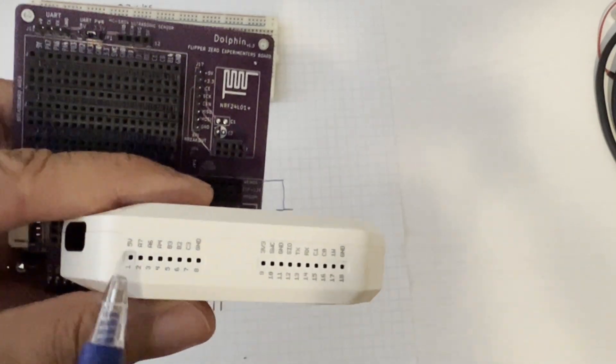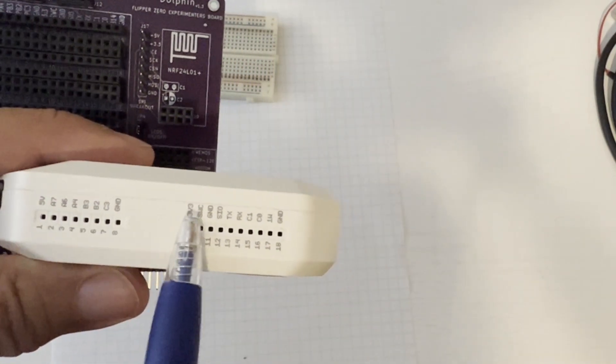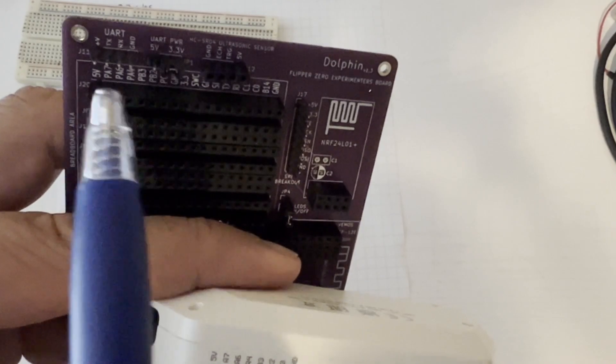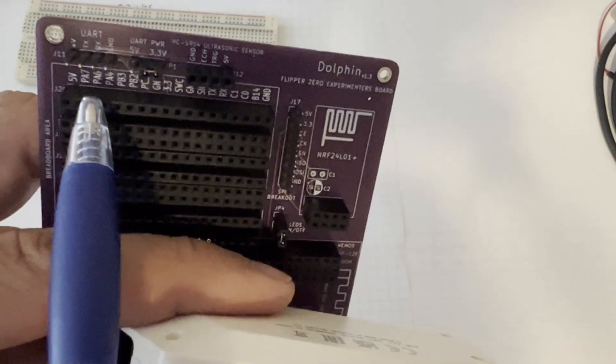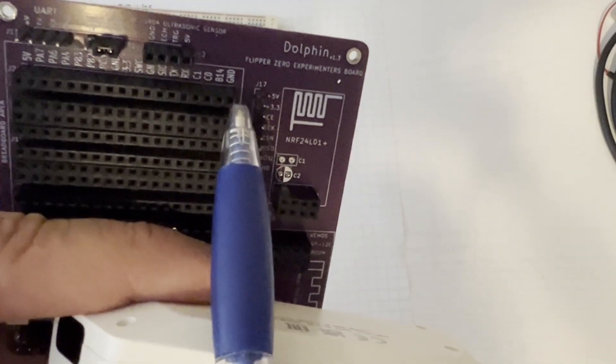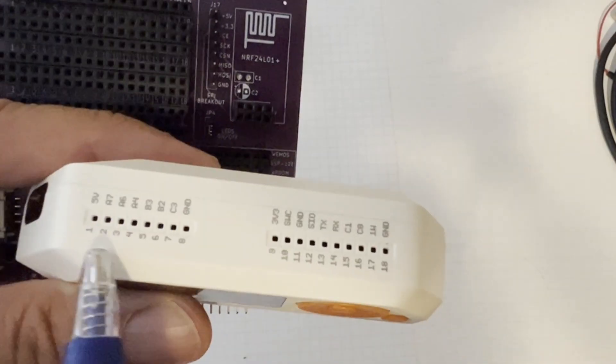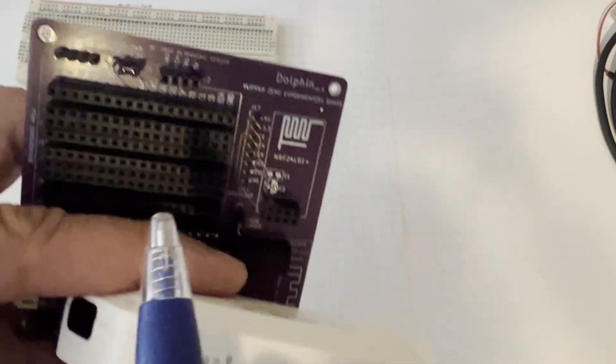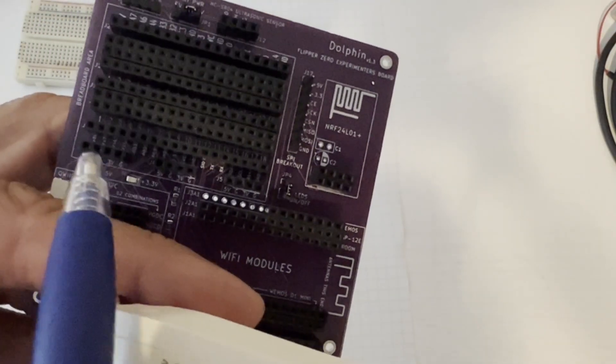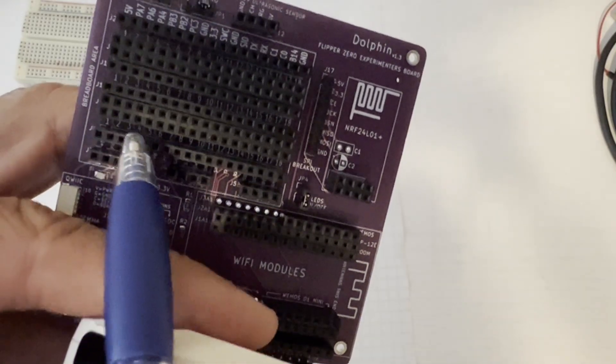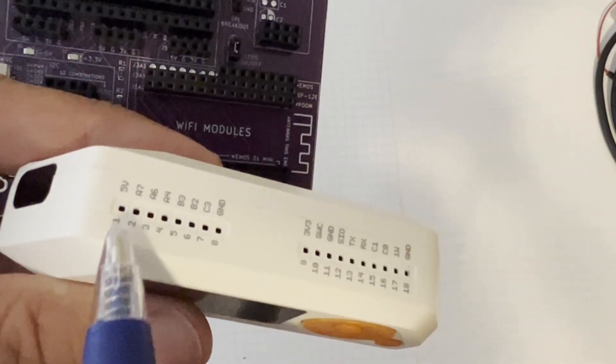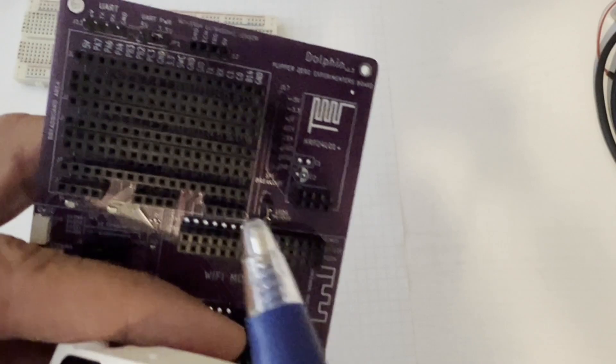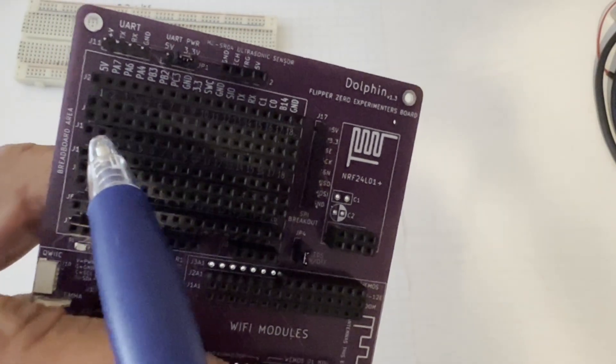Our Flipper Zero has 18 pins on the top for GPIO. And those pins end up exposed at this top header here. And then they also these same 18 pins end up exposed at this bottom header here. So the headers are not connected all together. They're connected to each individually to each pin.